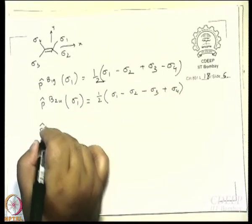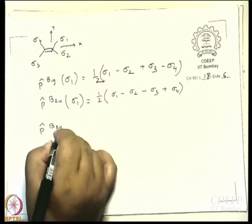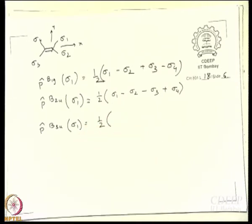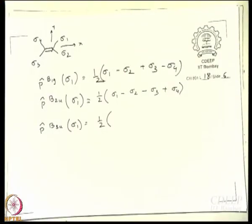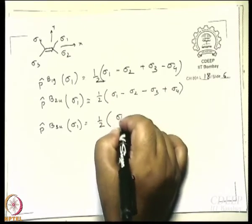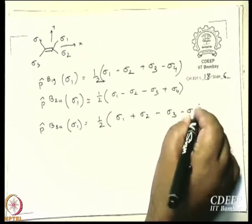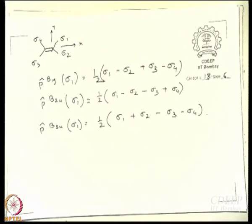And what happens when the projection operator of B3u operates on sigma 1? B3u characters are 1, −1, −1, 1, −1, 1, 1, −1. The answer is sigma 1 + sigma 2 − sigma 3 − sigma 4.